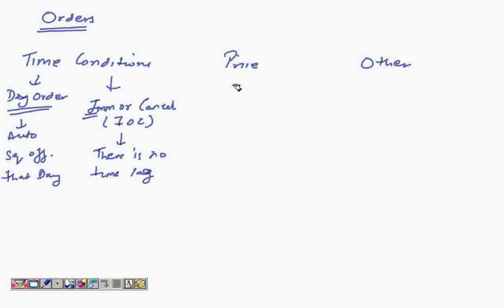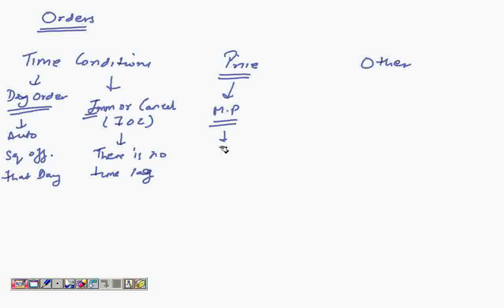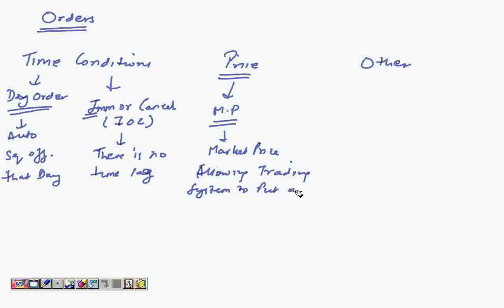Something very important is the price condition. There can be a lot of divisions on the basis of price. One is called the market price. Under market price, you do not put a price at which you are buying or selling. The trading system will automatically generate a price for your order — you're allowing the trading system to put a price.